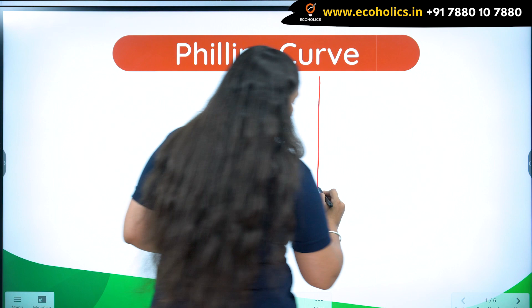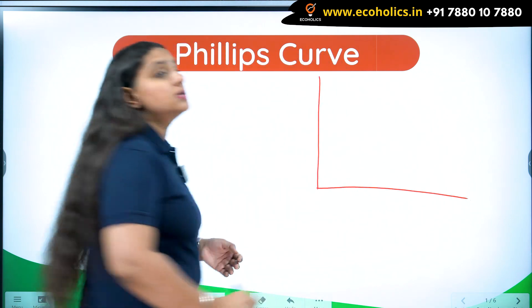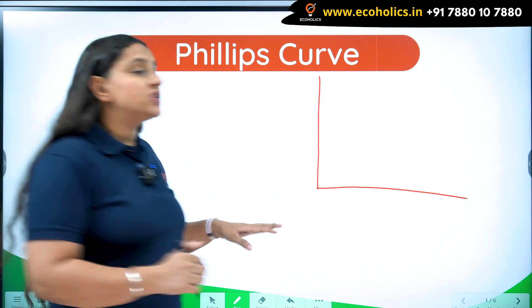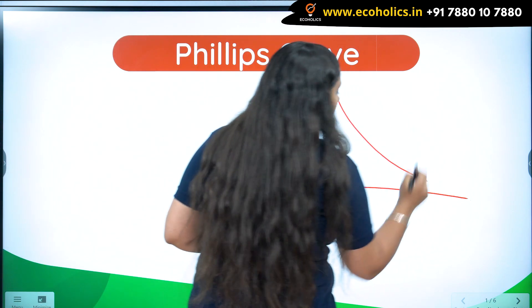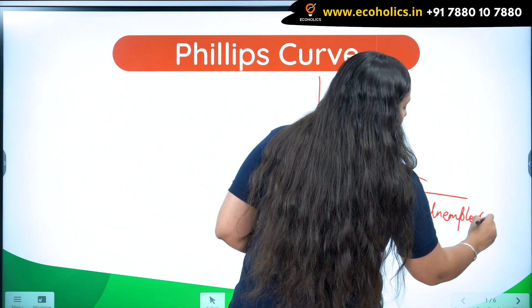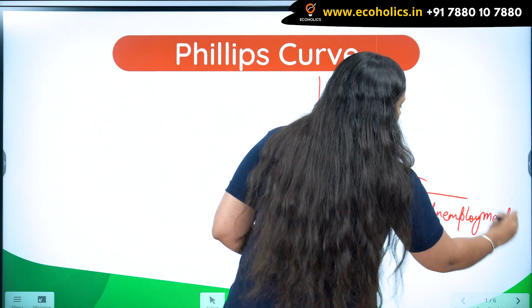In the short run, Phillips curve tells us that there is a negative relationship, which means whenever unemployment is going to increase, inflation is going to come down.